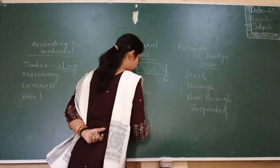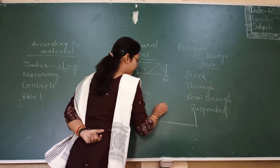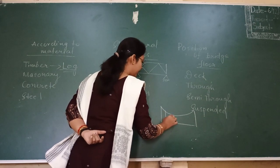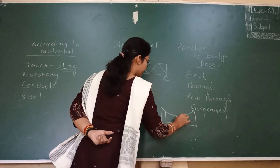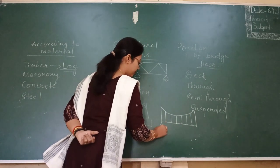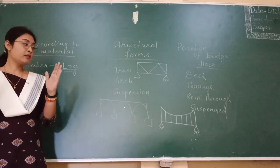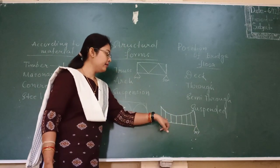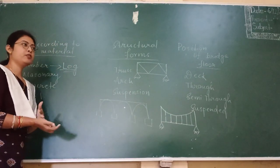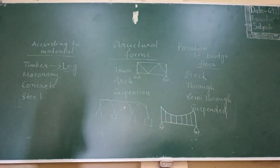Suspension bridge — the bridge is suspended; at the end we have supports, and the bridge is held with the help of suspension cables. The entire span is held with suspension cables throughout the span and support is provided at the ends. Next, based on the position of the deck we have through bridge, half-through bridge, semi-through bridge and deck bridge.